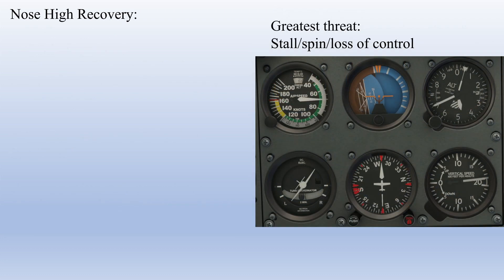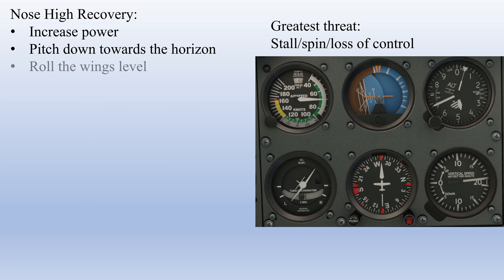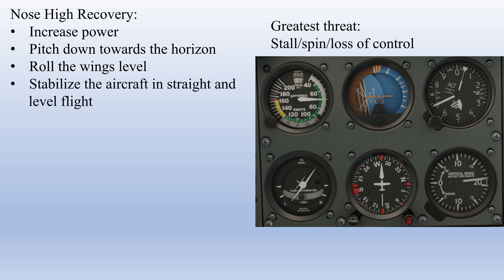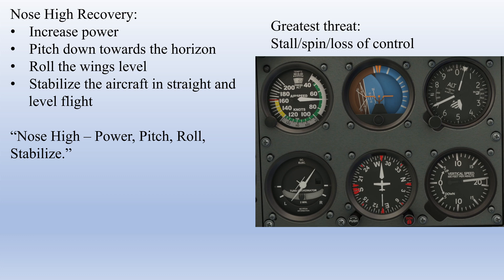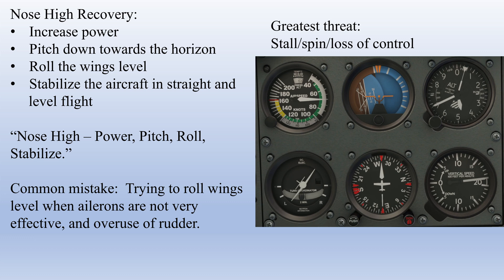For a nose high attitude, the greatest risk is stalling and spinning. So the recommended recovery technique is to increase power and then pitch the nose down towards the horizon. You can then roll the aircraft back to level — remember that when the aircraft is slow, the ailerons won't be super effective. Once you've done that, make small corrections to pitch and power to stabilize in straight and level flight. It may be helpful to say to yourself: nose high, power, pitch, roll. The most common mistake with this recovery is trying to roll the wings level when the aircraft is slow and the ailerons are not very effective, or overusing the rudder to level the wings without correcting the nose-up low-energy state with power and pitch first.